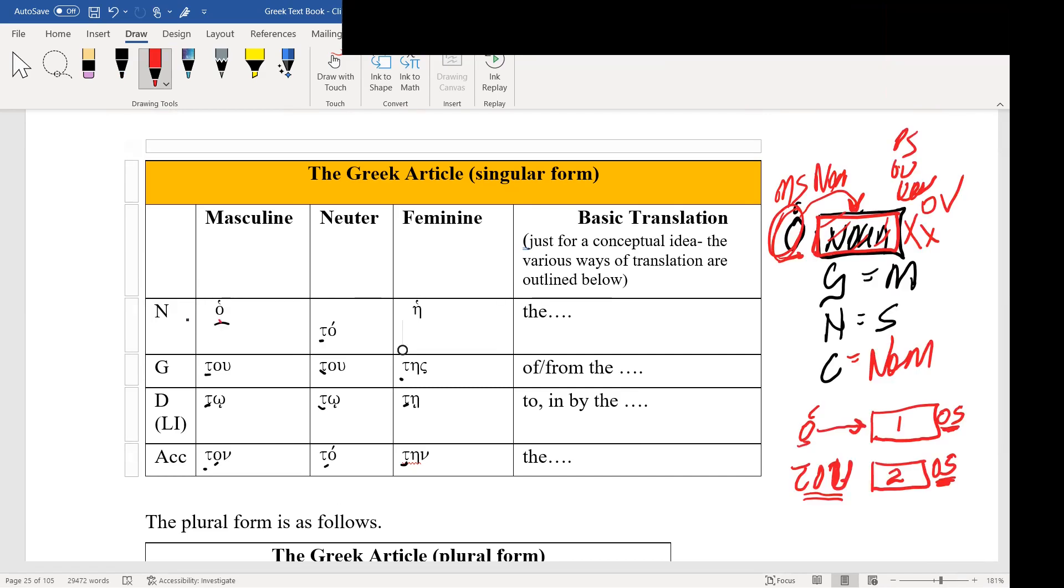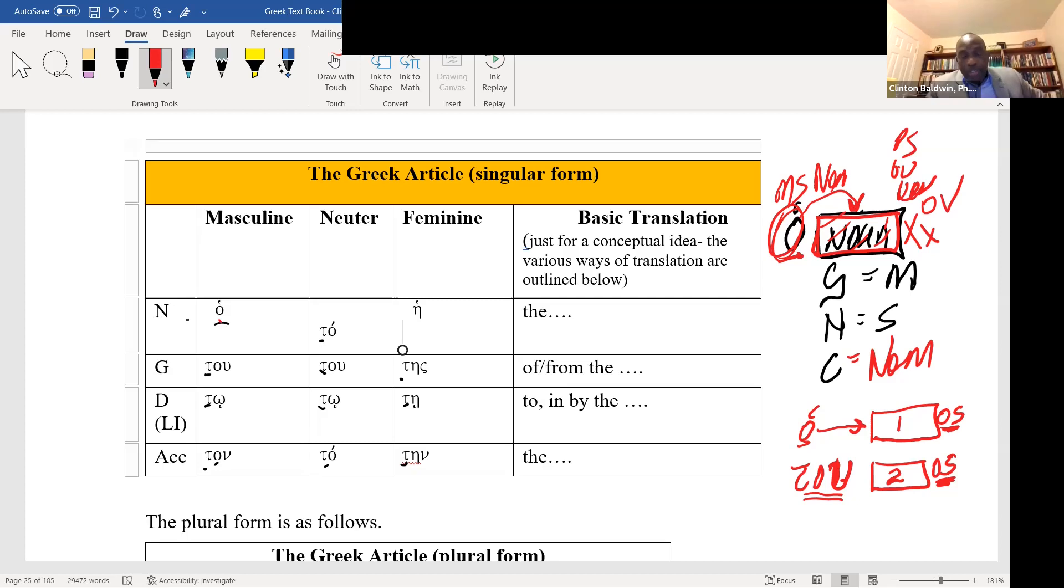Here is a noun ending in us, and it looks like nominative, but it's not nominative. It is genitive. Are you with me? I know that means an article, because the article will never change. But these nouns change. Because what happens is that this is a second declension noun in which the nominative is us, and this is a third declension noun in which the genitive is us.